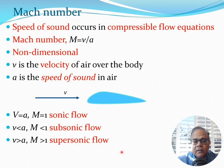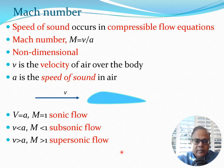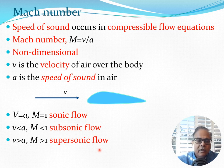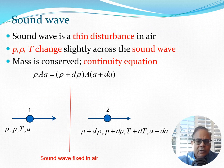If v is greater than a, then M is greater than 1 — that is supersonic flow. People talk about aircraft which are subsonic or supersonic, meaning the aircraft is capable of flying in those regimes — either slower or faster than the speed of sound. Anything which flies faster than the speed of sound will also typically have a regime where it flies below the speed of sound.